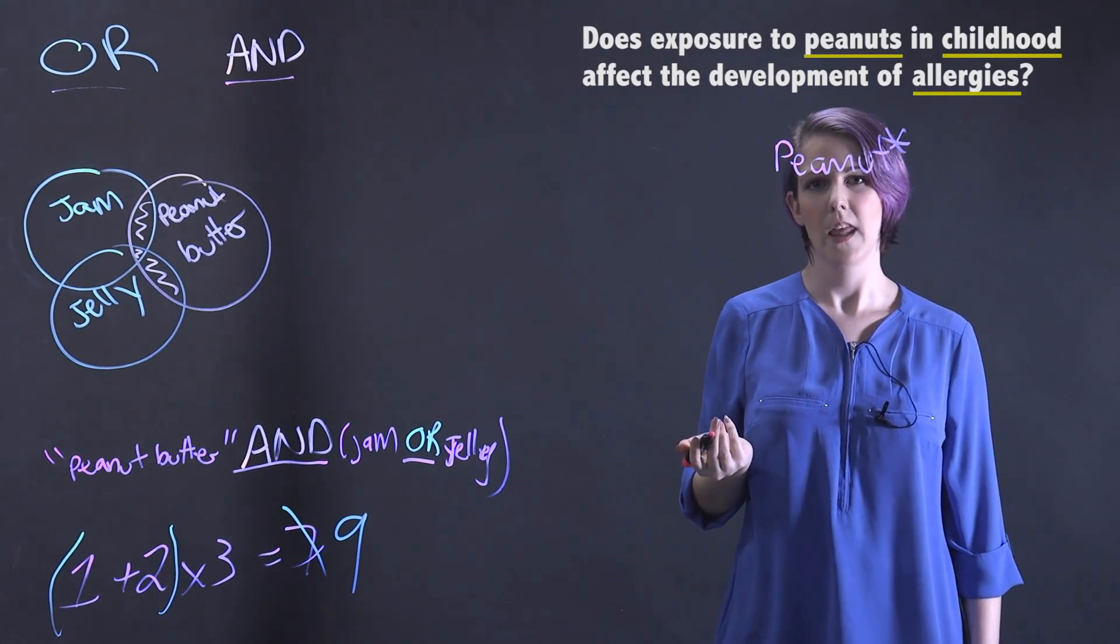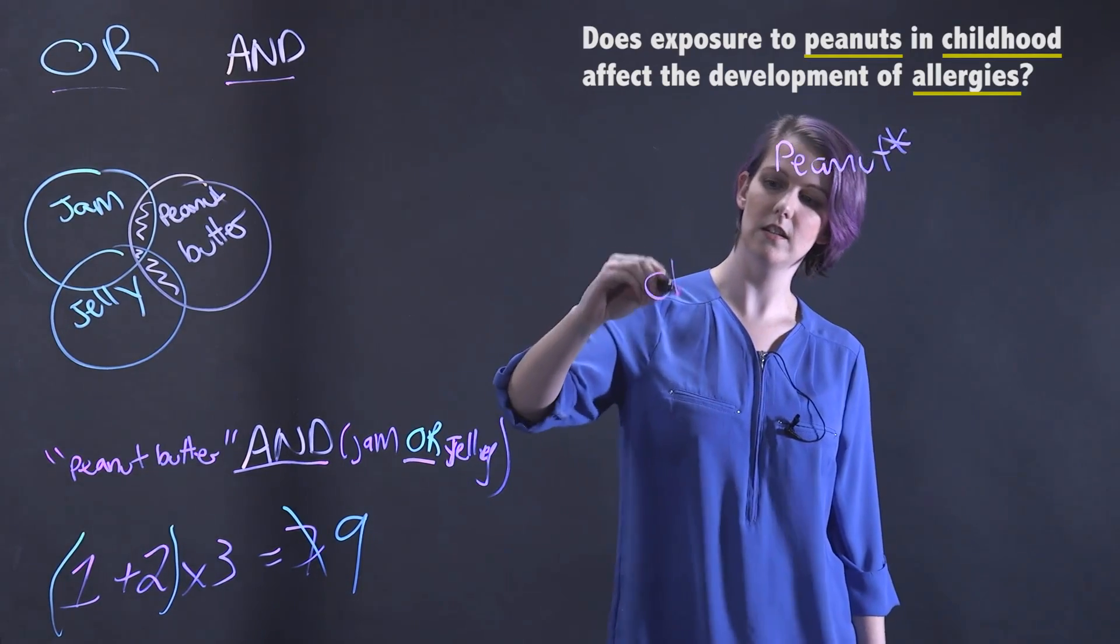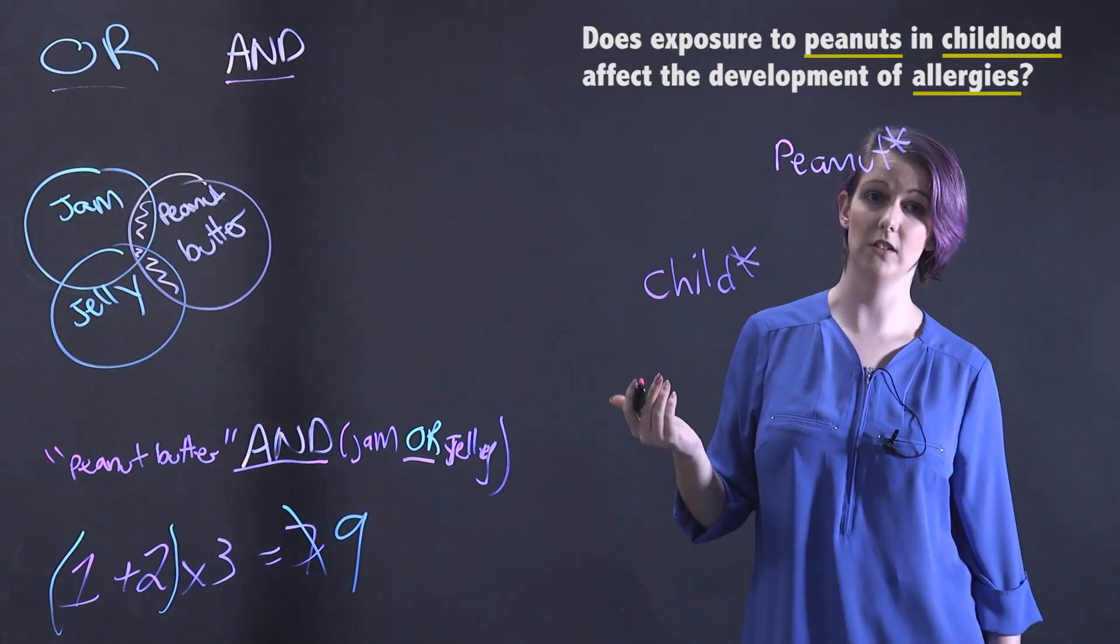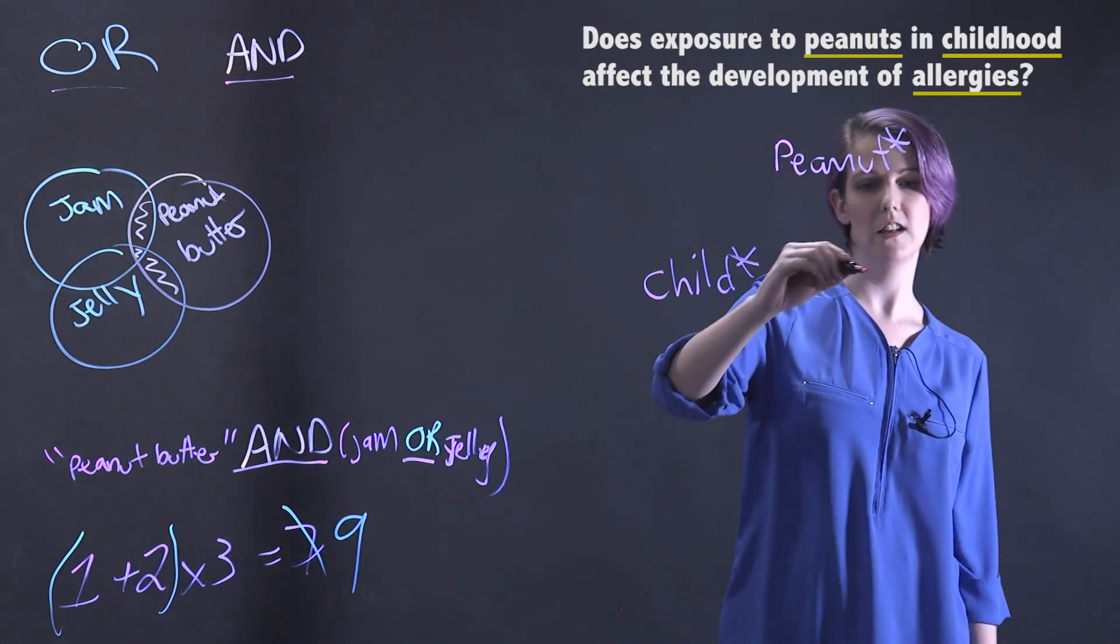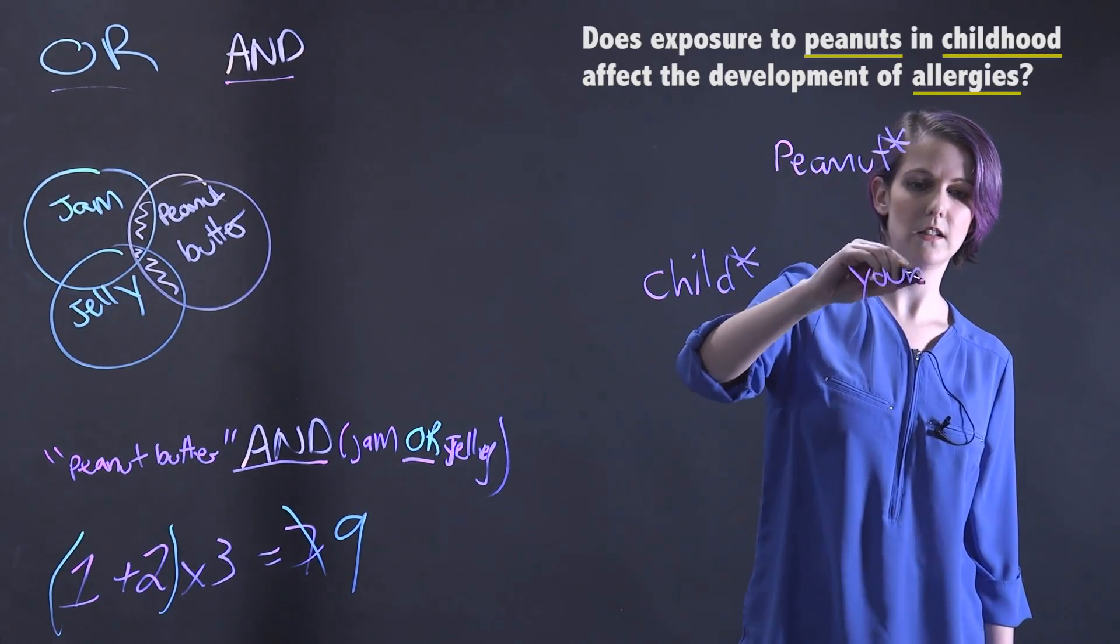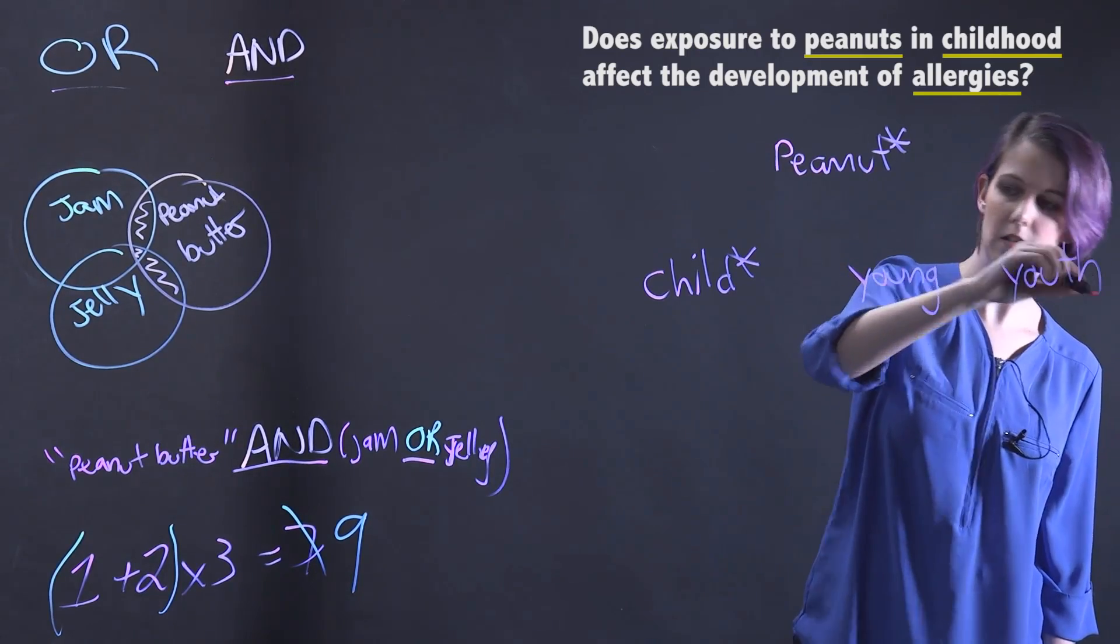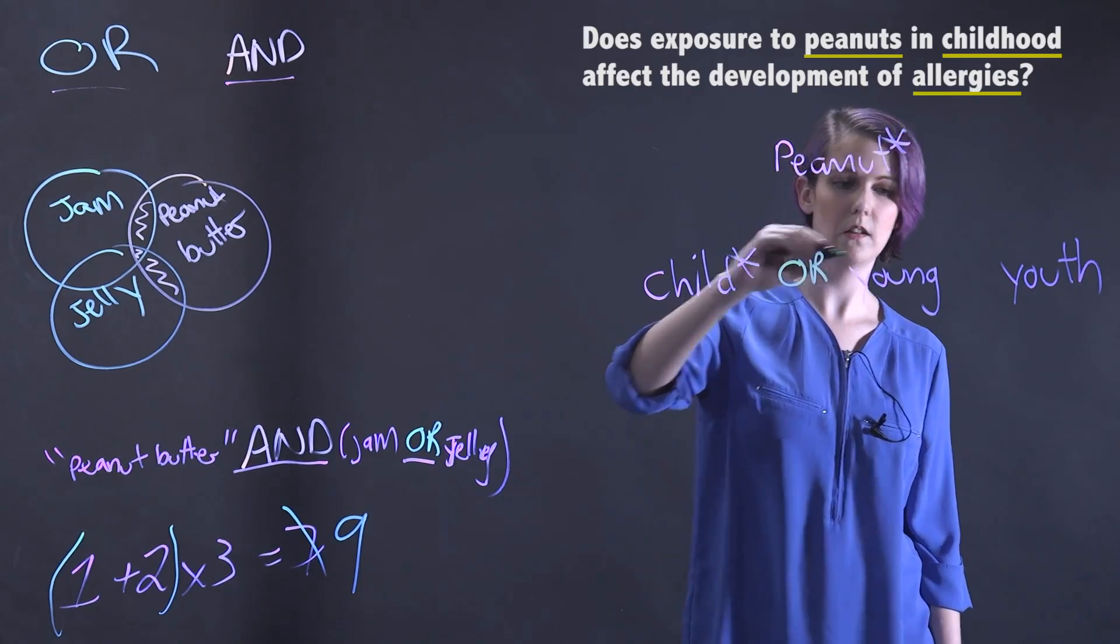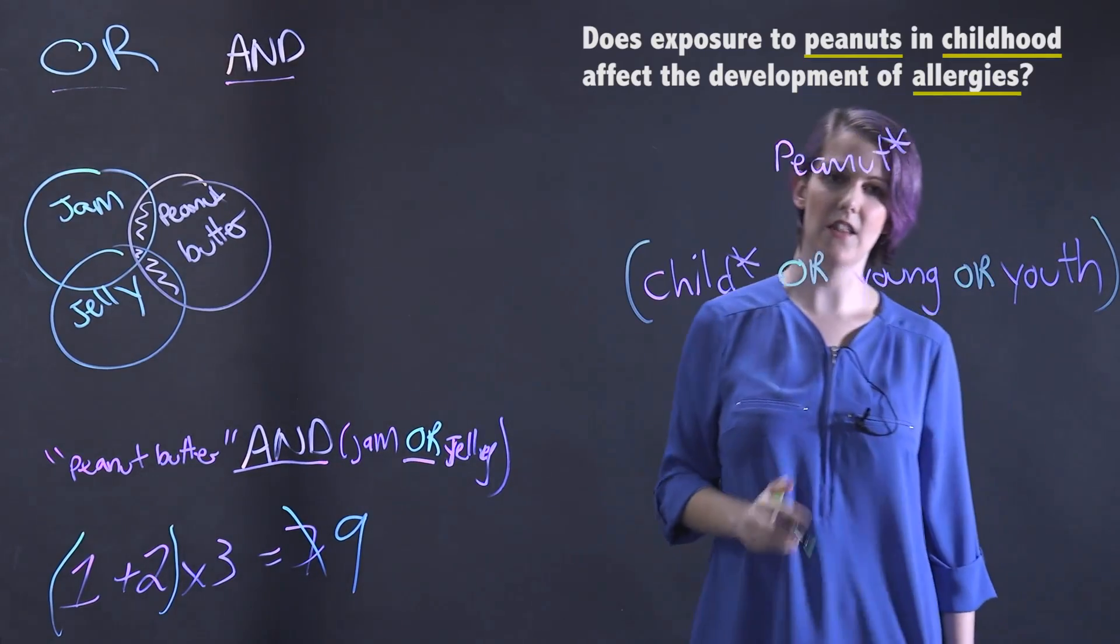Our next concept is childhood. We could search this using child with a star, which would find child, children, and childhood. But we could also search for similar terms, such as young or youth. These we would want to OR together and keep in brackets so that these terms stay together.